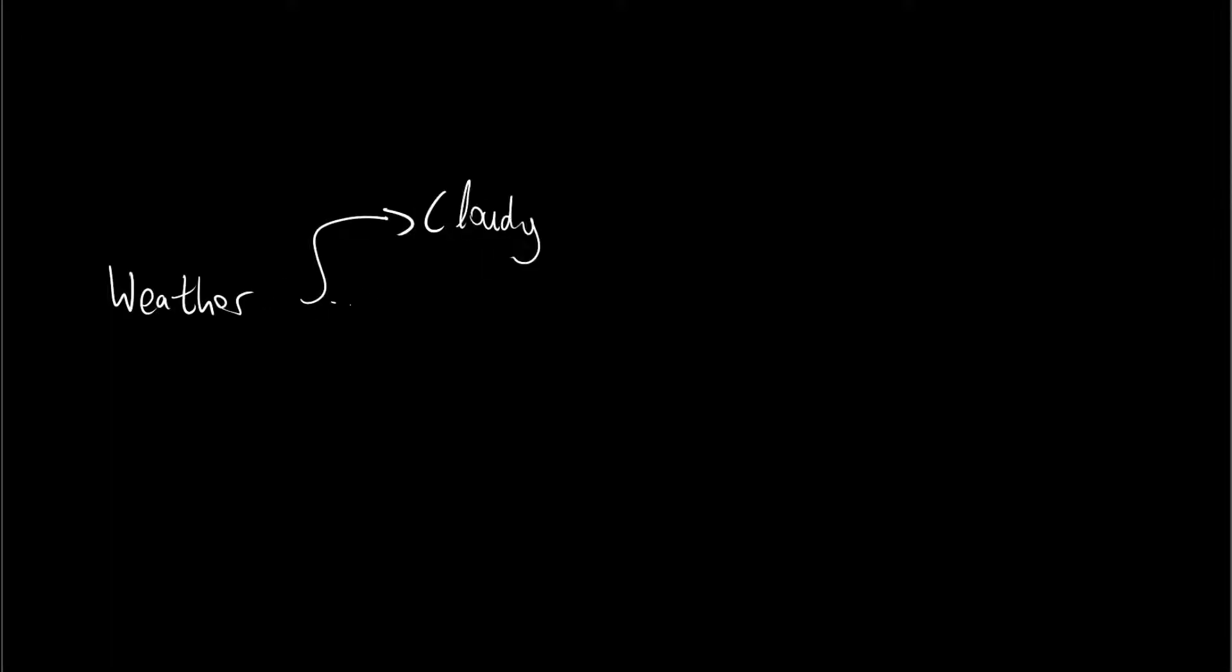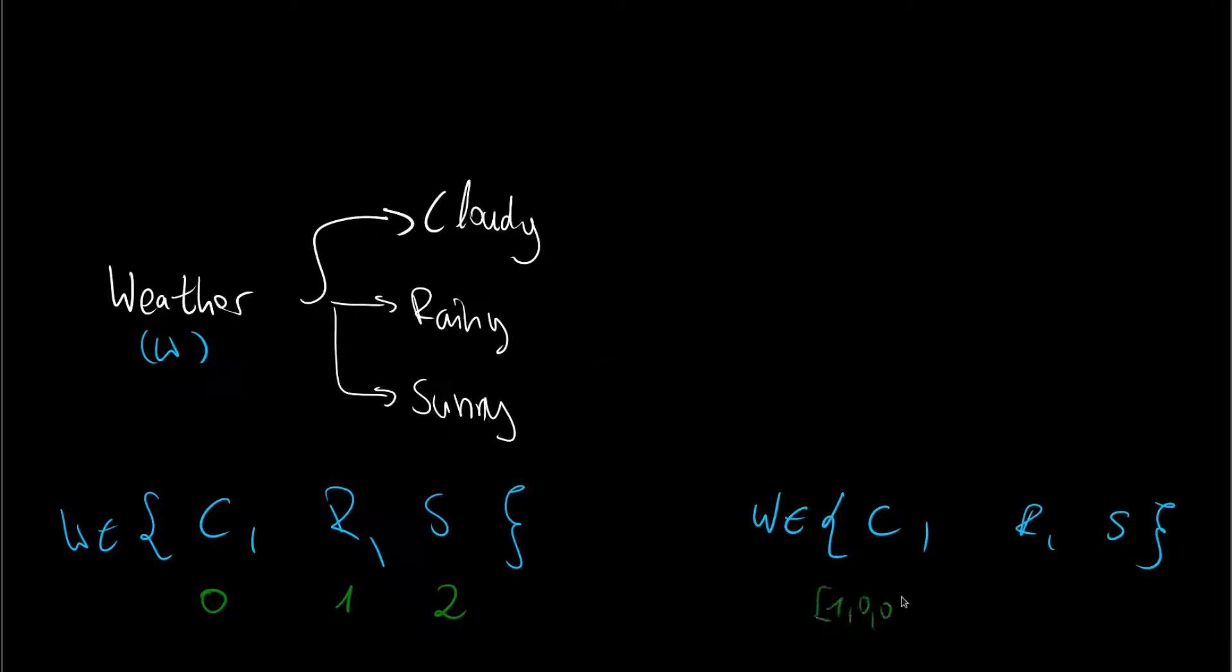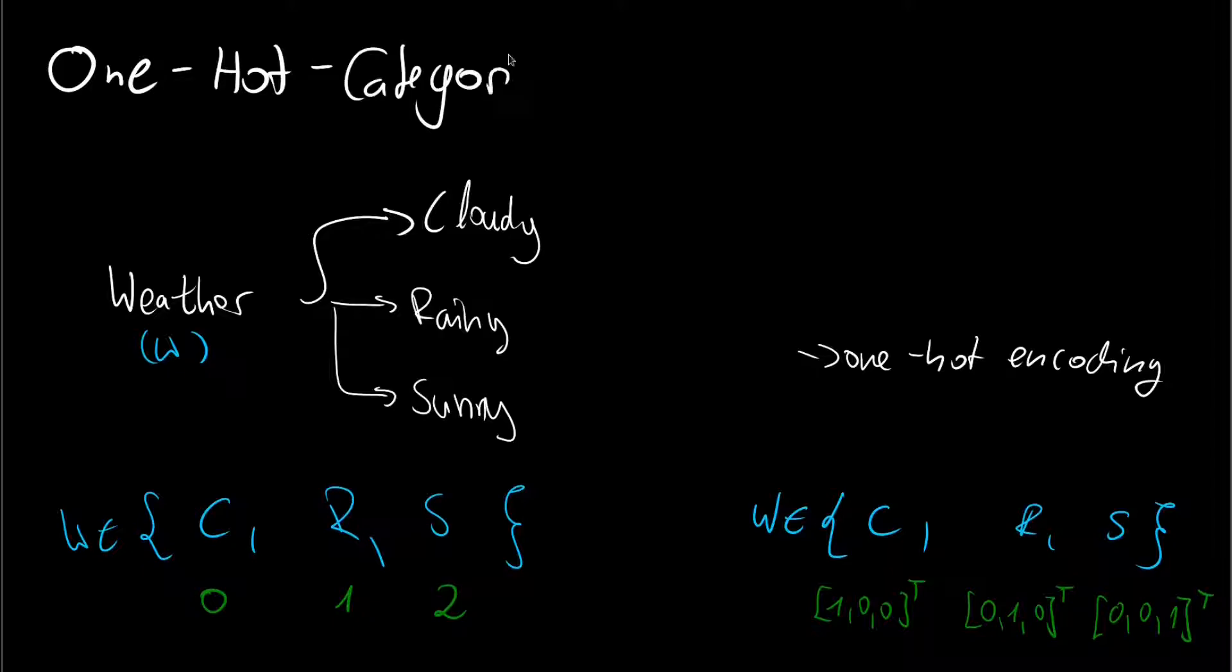We wanted to model the weather in more detail. For this we used the three states categorical distribution and encoded the three states as 0, 1 and 2. But we can also encode the states differently with vectors where only one state is hot, a one-hot encoding. What does this mean for the probability mass function and for sampling the distribution?